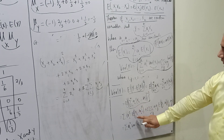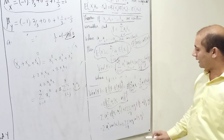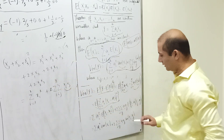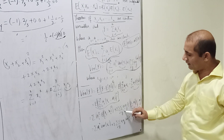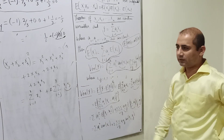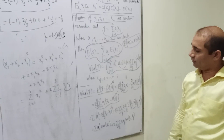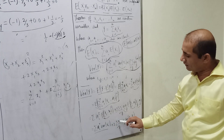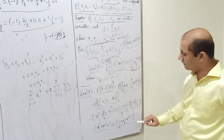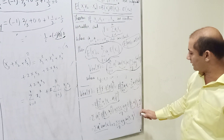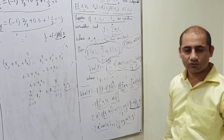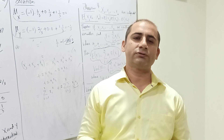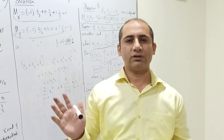Applying this expansion with the expectation operator, squared terms yield a_i²·Var(X_i) by properties of expectation, and cross terms yield 2·a_i·a_j·Cov(X_i, X_j) for i < j. This completes the derivation of the variance formula for a linear combination. Students are encouraged to work through the computations themselves, and questions are welcome. Thank you.